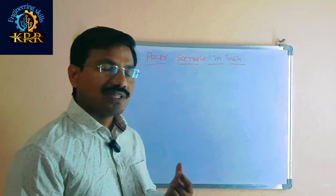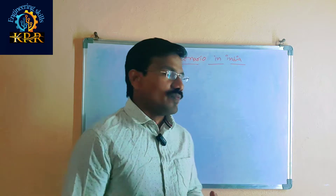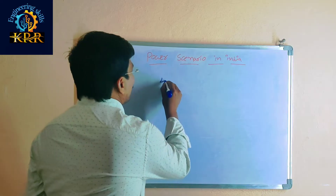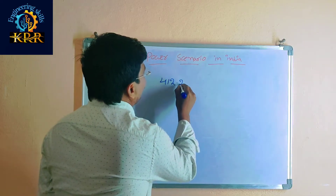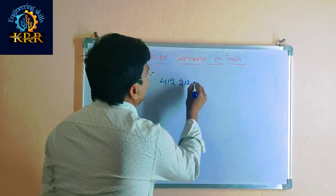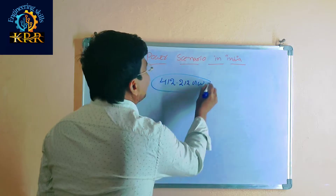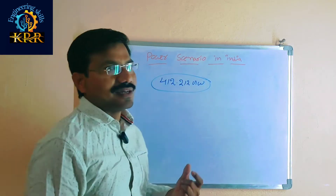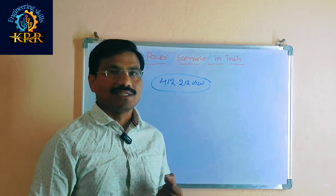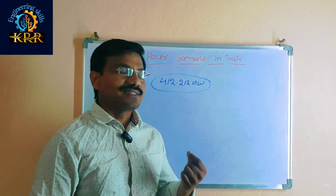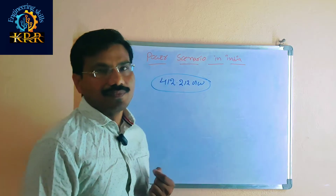First, the installed capacity — the power installed capacity in India is 412.212 gigawatts. This is the total installed power capacity in India.